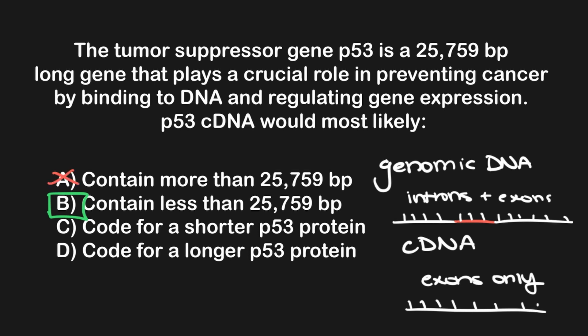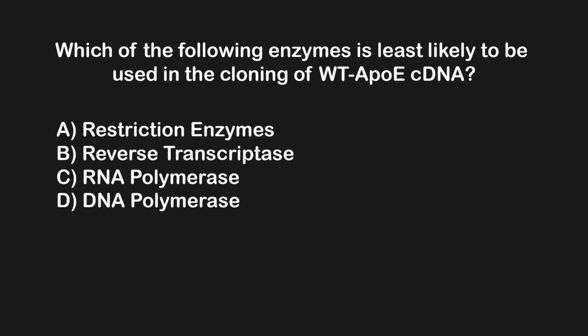A is incorrect because it flips the size relationship between genomic DNA and cDNA. Answers C and D are both incorrect because genomic DNA and cDNA would express the same protein, and since those proteins are identical, they would have the same size.